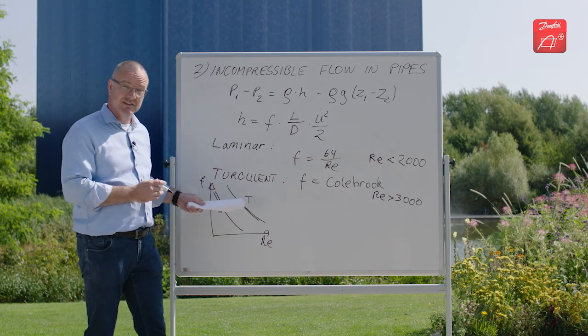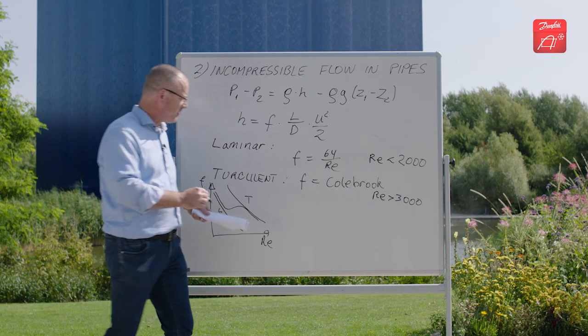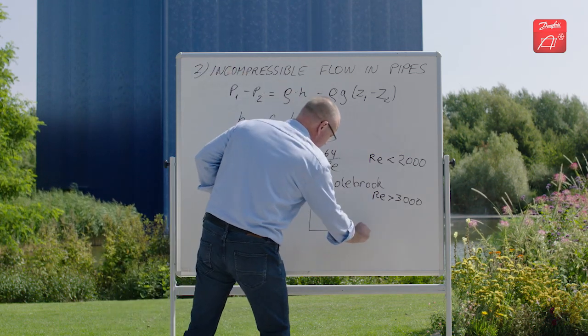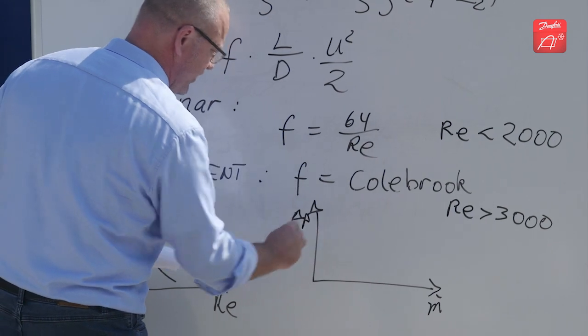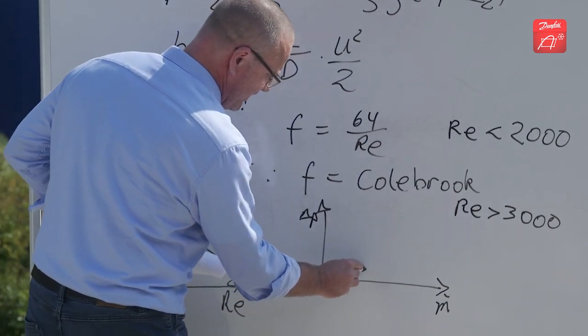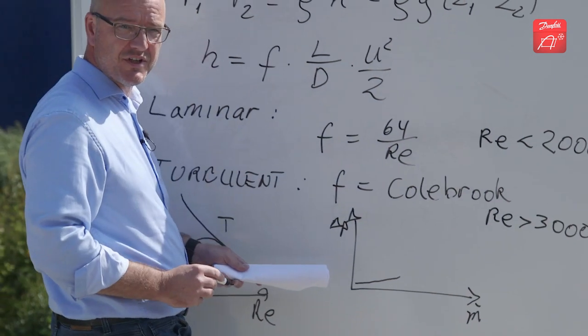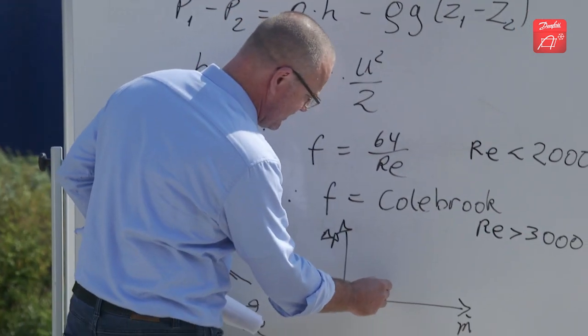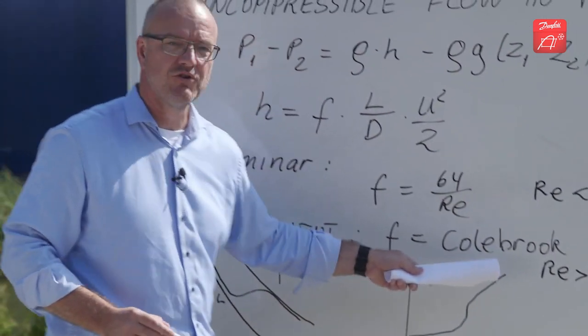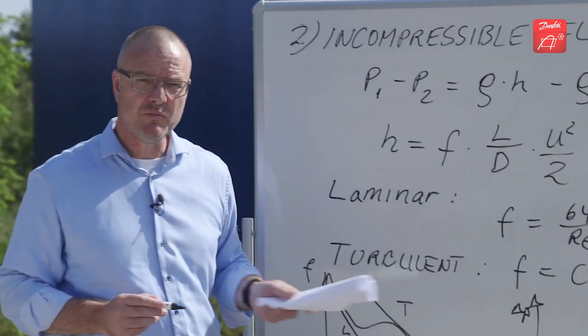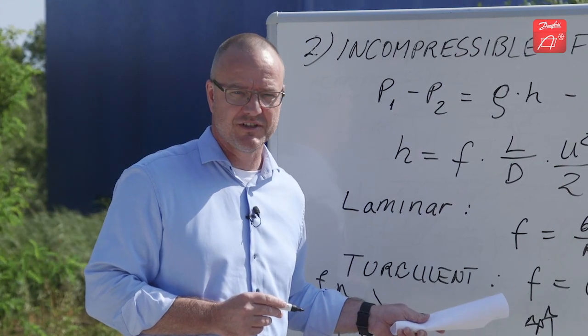You will be able to see this in CoolSelector. When you select the pipe and you plot the flow or the pressure drop if you plot the mass flow and the pressure drop you will see that when it is laminar the pressure drop rises slowly you have the smooth transition and then you go into the turbulent area. But you need to go down to very low flows to be able to see this.